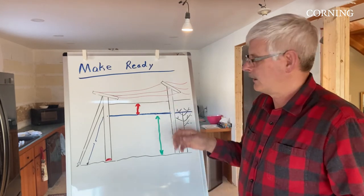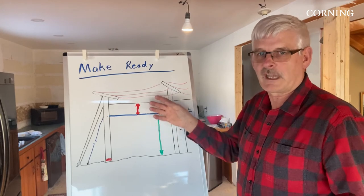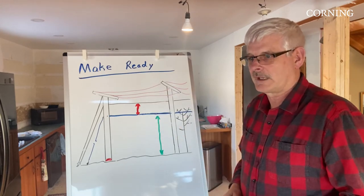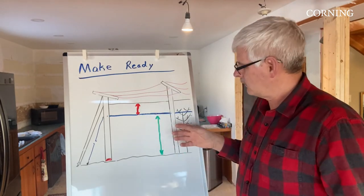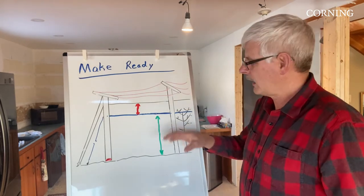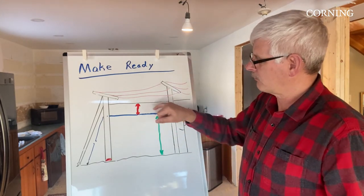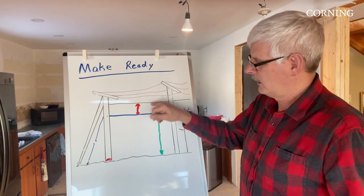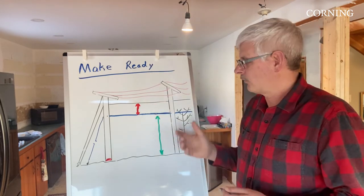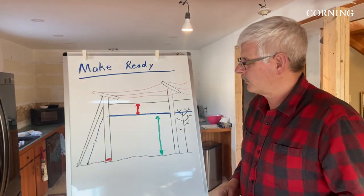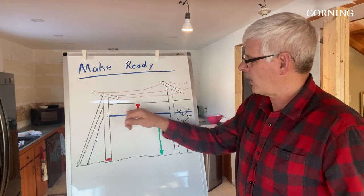Nine times out of ten, there's a pretty good probability they can move the cable around. But in cases where they can't, it could very well mean adding taller poles that will enable everything to be moved up to create the proper separations between the power and the ground. Those are a couple things they'll be looking at in terms of what's already on the pole.